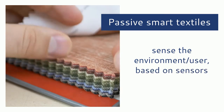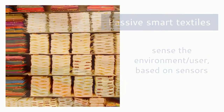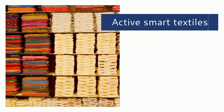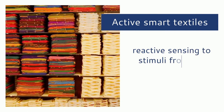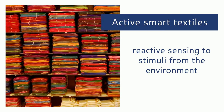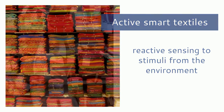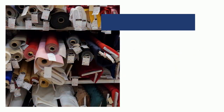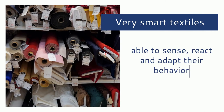Active smart textiles are reactive, sensing stimuli from the environment and integrating an actuator function and a sensing device. And very smart textiles are able to sense, react, and adapt their behavior to the given circumstances.